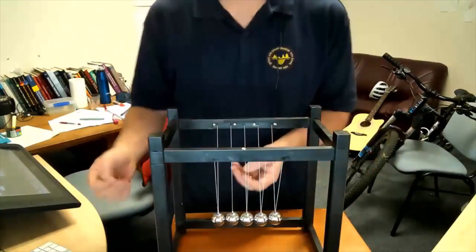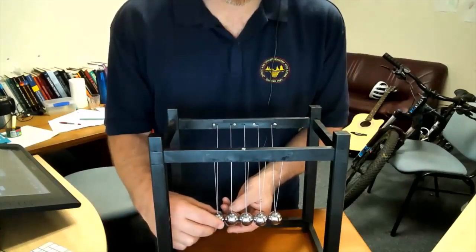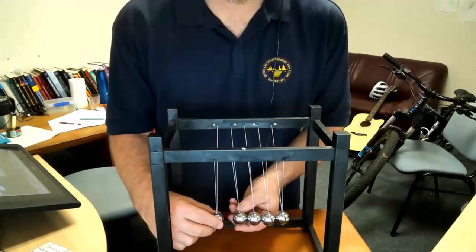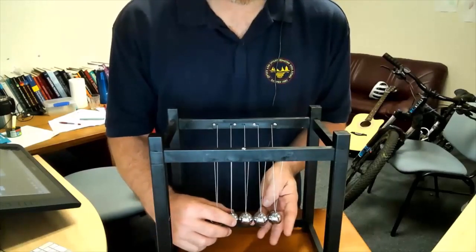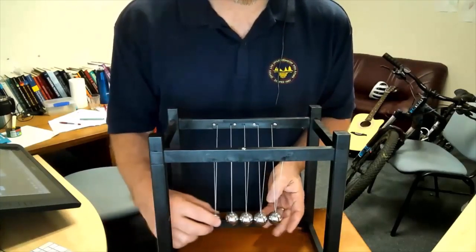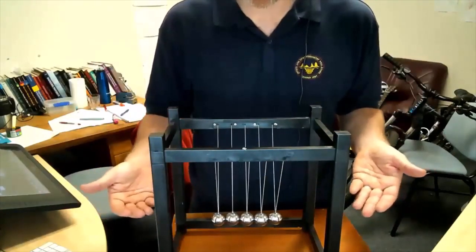Now, if momentum were conserved, there are many ways this could happen. If I've got one ball coming in, it could come to a stop and then four of them could go a quarter of the speed. That would conserve momentum. Or if I had one ball coming in, I could have two going off at half the speed. There are all sorts of different ways I could conserve momentum in that collision.